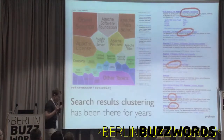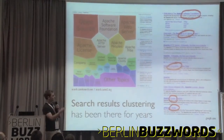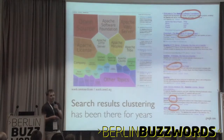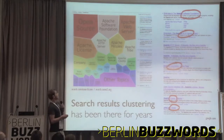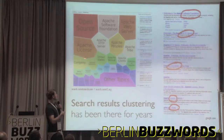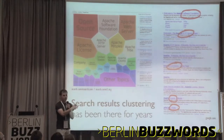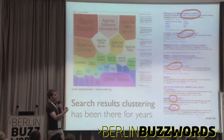Search results clustering has been around for a while. If you go to the Carrot² demo and type, for instance, 'Apache', you'll see web search results divided into hopefully meaningful groups — something about the Apache Foundation, something about the web server, but also non-technical results such as the Apache tribe or a company called Apache. This is an example of what I'd call explicit clustering: you submit a query, get results, and get well-labeled clusters, and for each cluster you get documents.